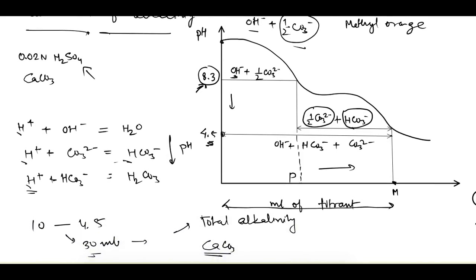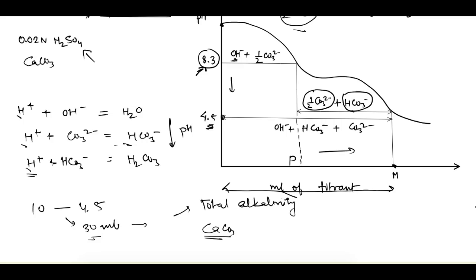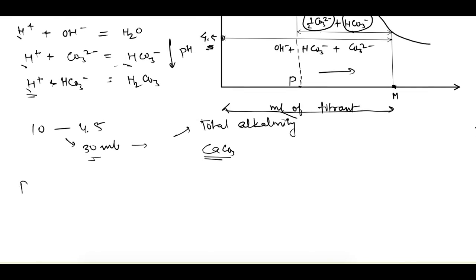Let's say the amount of titrant used up to pH 8.3 is P, and the total amount of titrant used up to pH 4.5 is M. If P equals M, that means all the titrant was consumed before the 4.5 endpoint, indicating the alkalinity was due only to hydroxide ions — we call this caustic alkalinity.